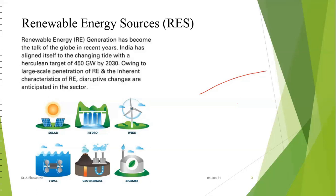Recent development aims to reduce the cut-in speed to below 3 mph so that turbines rotate even in mild wind. This is achieved by reducing blade weight using improved composite materials that increase blade strength while reducing weight, enabling turbines to start rotating with minimal wind velocity.